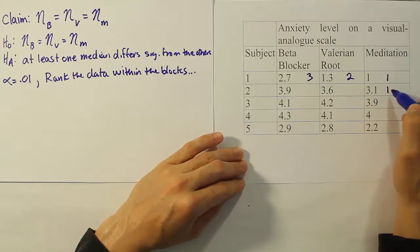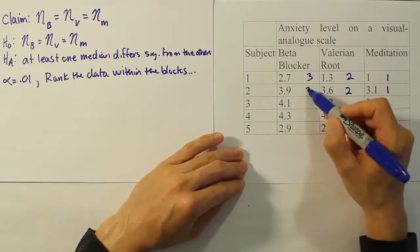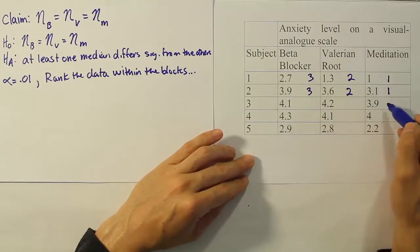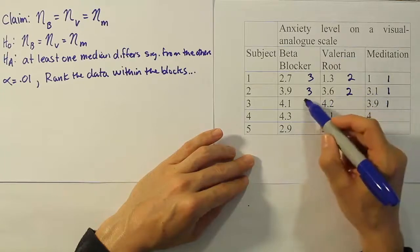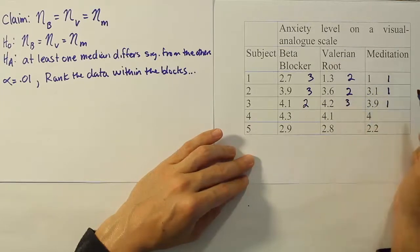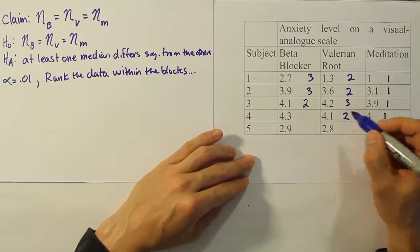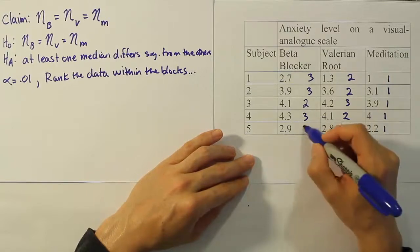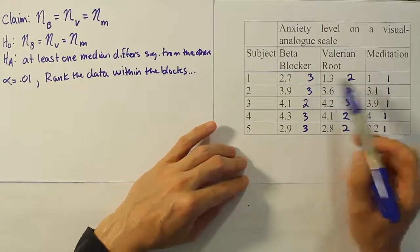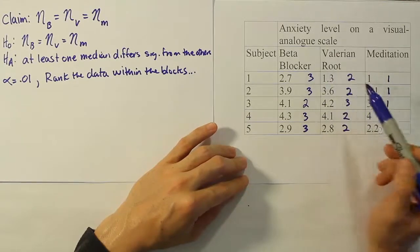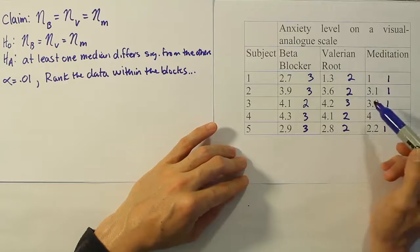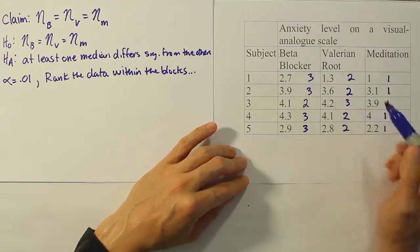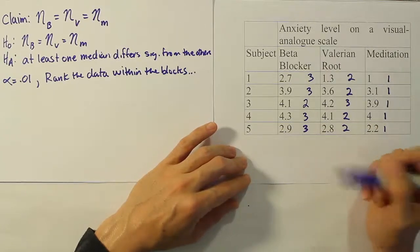In this row, this is the smallest value, this is the next smallest value, and this is the third smallest value. Then we have 3.9, 4.1, 4.2. So again, smallest value, next smallest value, largest value. Those are our rankings right across the rows. So 1, 1.3, 2.7, 3.1, 3.6, 3.9. All these are ranked correctly. 3.9, 4.1, 4.2, then 4, then 4.1, then 4.3, 2.2, 2.8, then 2.9. So I ranked them all correctly.